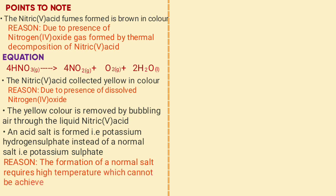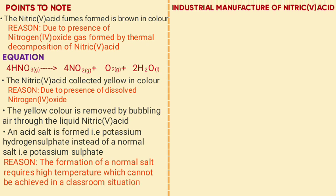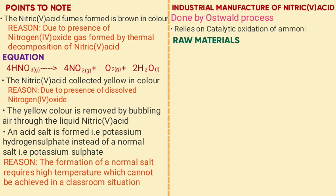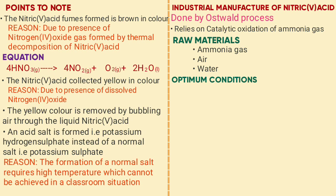Next we look at industrial manufacture of nitric acid. It is done by a process called the Oswald process, which relies on catalytic oxidation of ammonia gas. Raw materials include ammonia, air, and water. The optimum conditions are a temperature of 900 degrees Celsius, a pressure of 9 atmospheres, and a platinum-rhodium catalyst.